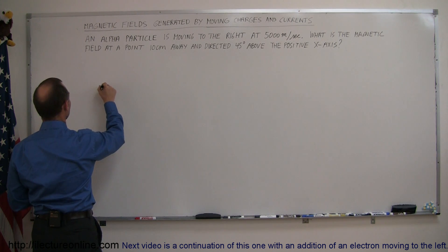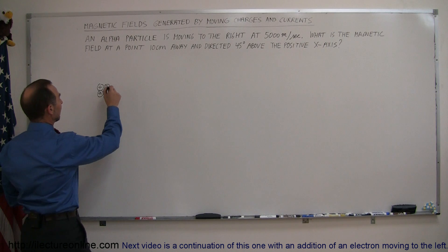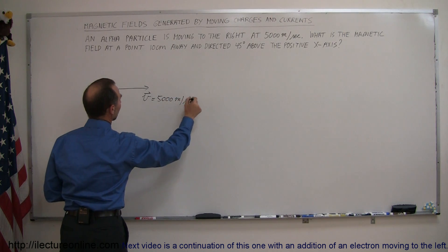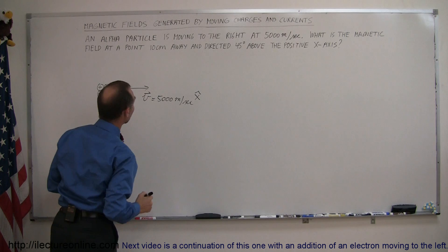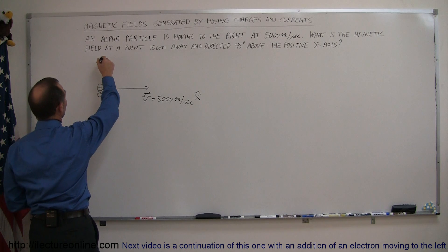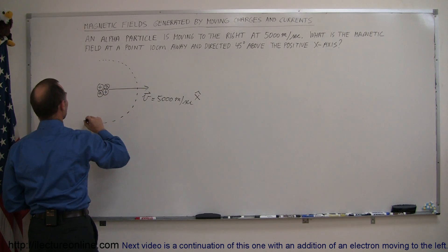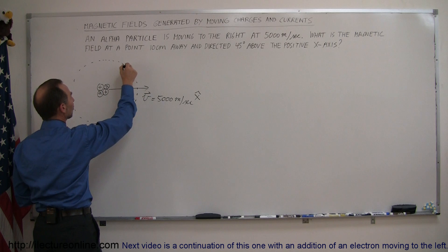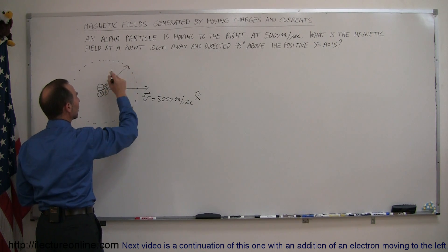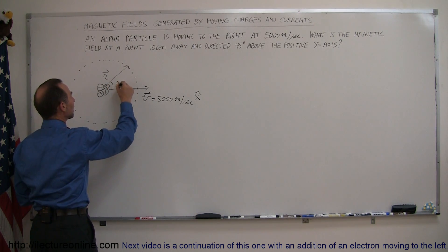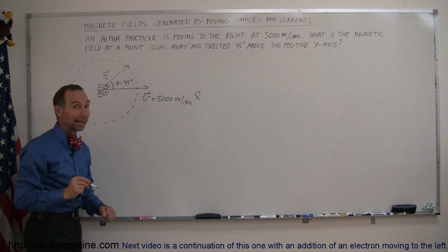An alpha particle is something that has two protons and two neutrons — it's essentially the nucleus of a helium atom. It's moving to the right at a velocity v equal to 5,000 meters per second in the x-direction. We're supposed to find the magnetic field 10 centimeters away, so let's draw a circle around the moving particle with a radius of 10 centimeters. We find the magnetic field at a position on that circle at an angle of 45 degrees above the horizontal, where this is the position vector r and theta equals 45 degrees.